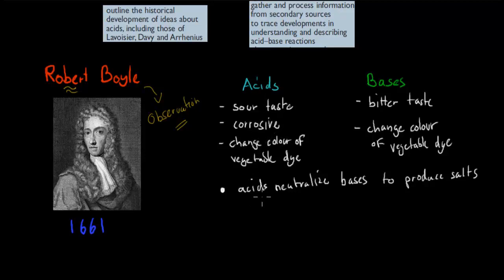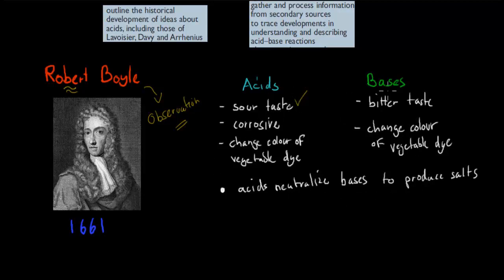Acids also neutralize bases to produce salts. Whereas bases have a bitter taste and also change the color of vegetable dye. So we've got some differences: acids have a sour taste whereas bases have a bitter taste, and they change the color of the dye but to different colors.